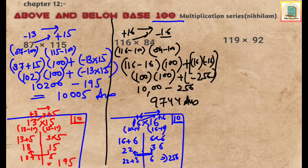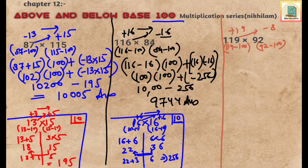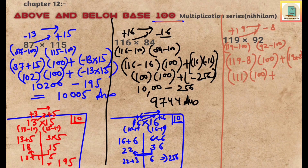The last question is 119 multiplied by 92. Deviations: 119 minus 100 gives plus 19, and 92 minus 100 gives minus 8. First number plus second deviation: 119 minus 8 equals 111, multiplied by base 100, plus 19 multiplied by minus 8 gives minus 152. So 11100 minus 152 gives 10948 as the answer.